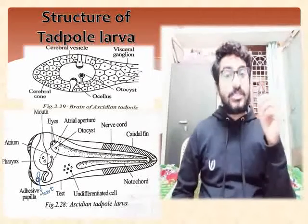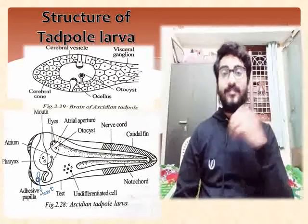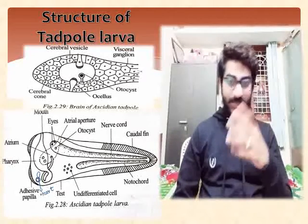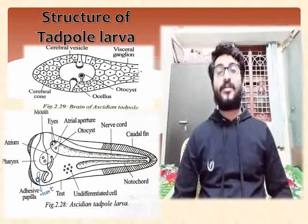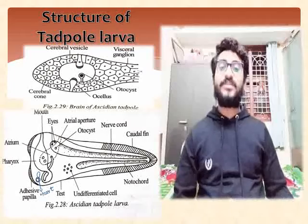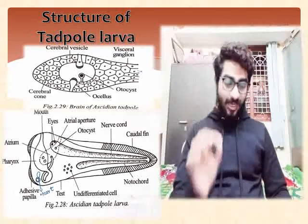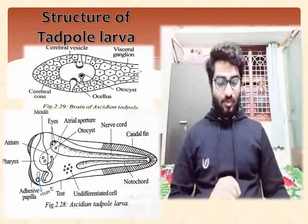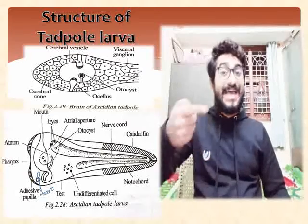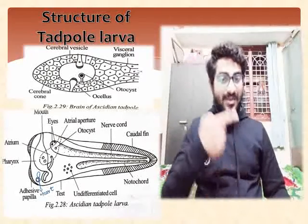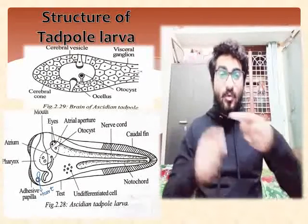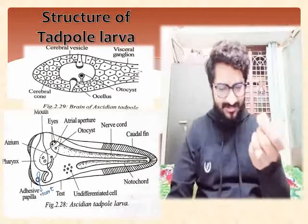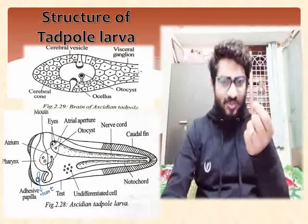It does not feed during its lifetime. It looks like a frog tadpole, hence the name tadpole larvae. The size of this tadpole larvae is 1.5 mm in length — very small, almost microscopic.